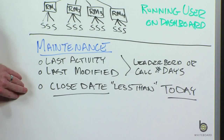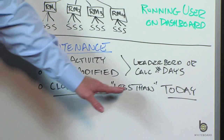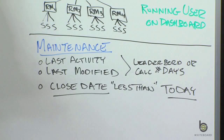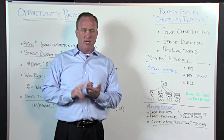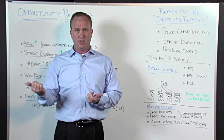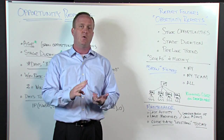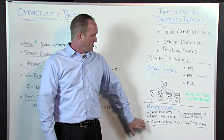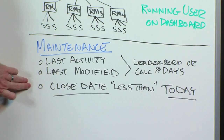Another report I like to run: set the criteria so the close date is less than today. What I'm looking for is an open opportunity with a close date in the past. That tells me two things: either we need to push the close date forward because it's still open, or we need to close it out — win the deal or lose it. It's a good report to run at the end of the month.